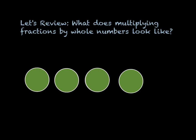Let's also review what multiplying fractions by whole numbers looks like. In this picture, you see that we have four circles completely shaded in with green, giving us a whole number of four. But we want to find out what one-third of four is going to look like. So in order to do that, we would shade in only one-third of each of these four wholes.